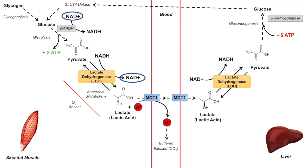This entire process is known as the Cori cycle: lactate produced in the skeletal muscle is transported to the liver, where it is recycled into glucose, which is then taken back up by the skeletal muscle. This is critically important so that the skeletal muscle does not become acidotic from too much lactic acid, and it allows the lactate byproduct of anaerobic metabolism to be recycled back into glucose as an energy source, enabling the skeletal muscle during intensive exercise to keep generating ATP.